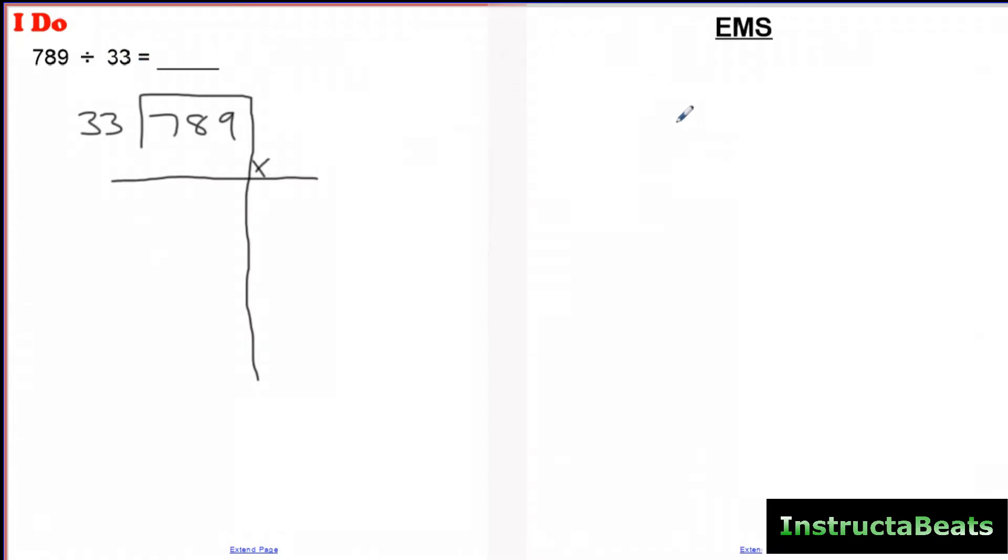So my divisor is 33. So really what you're doing in division, one of the ways you can divide is you can think about this as: if I have 789, how many groups of 33 can I fit into that? Well, that's one of the two ways to think about division, but that's how it's going to be a little bit easier for you to think about as you do this.